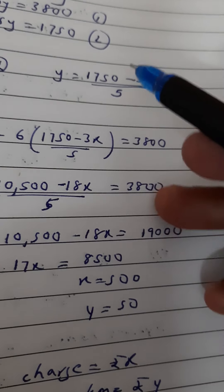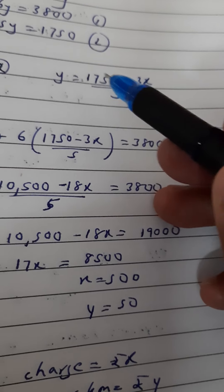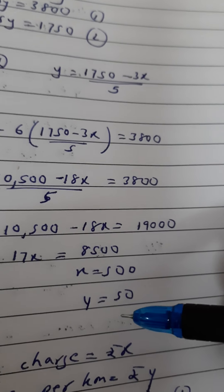Once you get x equals 500, you can put this value here. Then you will get the value of y. Y comes out to be 50.